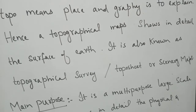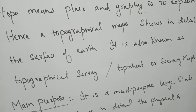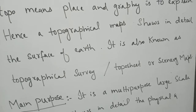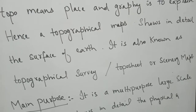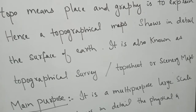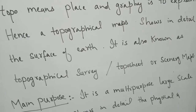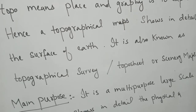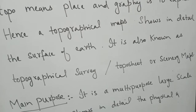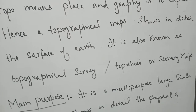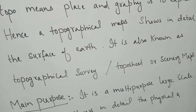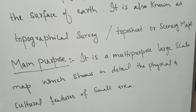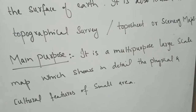These maps can only be drawn if a detailed survey is conducted. That is the reason we can also call them topographical survey, topo sheet, or scenery maps — scenery maps because they represent a full scenic view drawn on a large scale. Large scale and small scale discussion we had already done in the previous lecture, where we discussed that small scale maps cover extensive areas while large scale maps cover small areas.